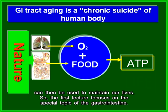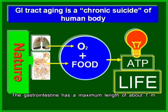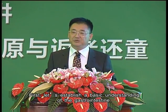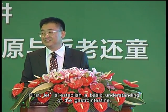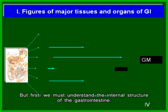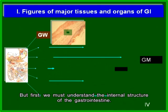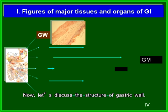The first lecture focuses on the gastrointestines, which have a maximum length of about seven meters. Let's establish a basic understanding. We already discussed how long it is. Now let's discuss the structure of the gastric wall — there is the mucosa layer, submucosa layer, muscularis layer, and serosa layer from the inside to the outside.